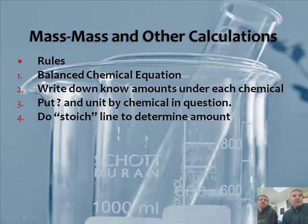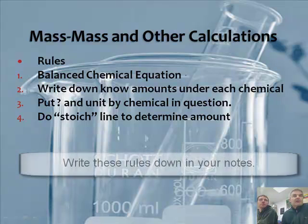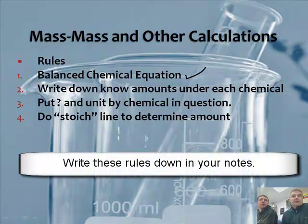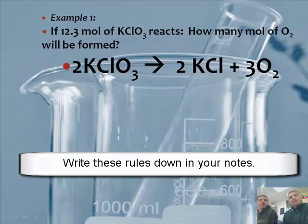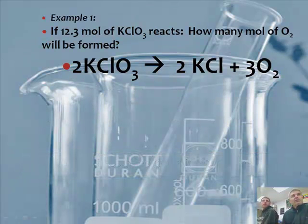So when we're doing a mass-mass calculation, here are the rules that you need to follow. Number one, balance the chemical equation. Number two, write down the amounts under each chemical. Number three, put a question mark on a unit by the chemical in question. And then do the stoic to determine the amount. So these are the rules. So I would recommend you just pause the video and copy this down.